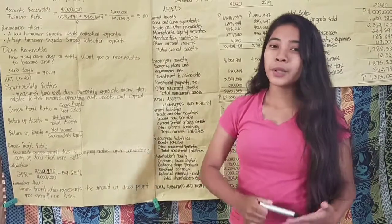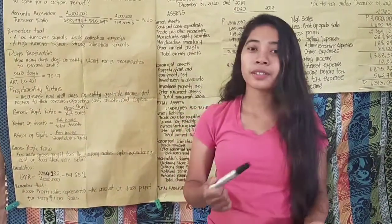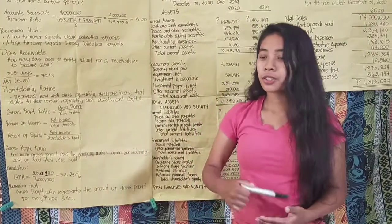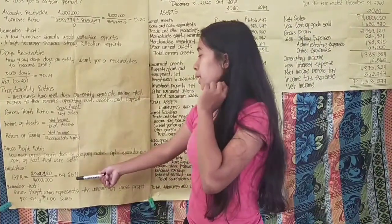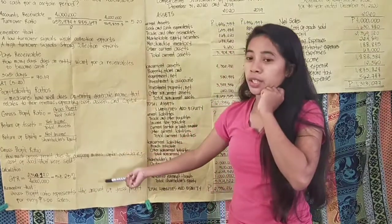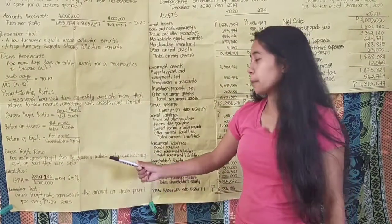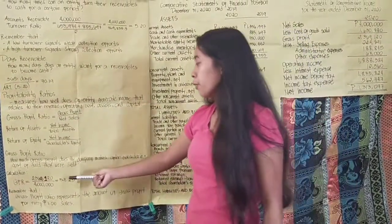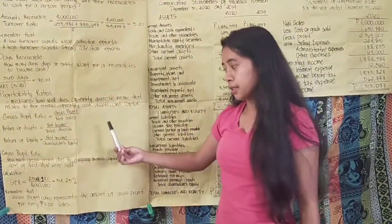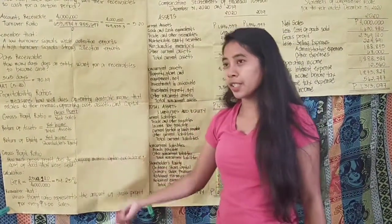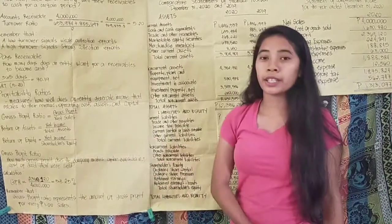Gross profit ratio represents the amount of gross profit for every 1 peso of sales. For every 1 peso of net sales, to find the centavo equivalent, multiply 59.23% by 1, giving 0.59. So for every 1 peso the company sells, they earn 59 centavos in gross profit.